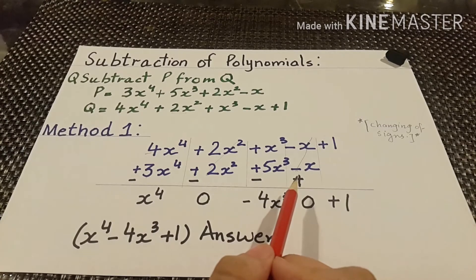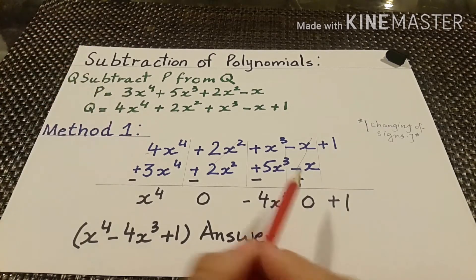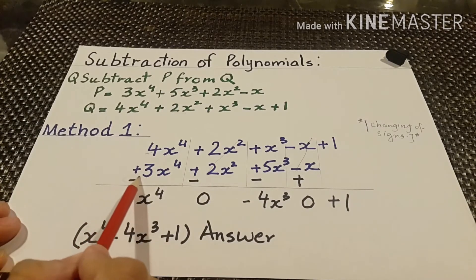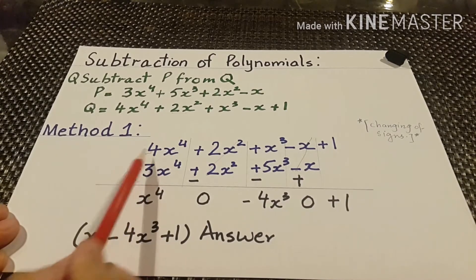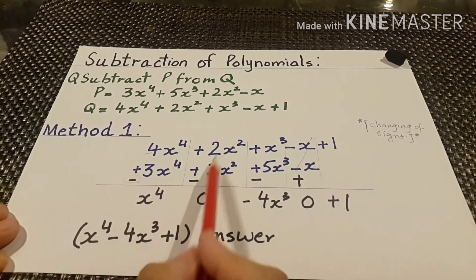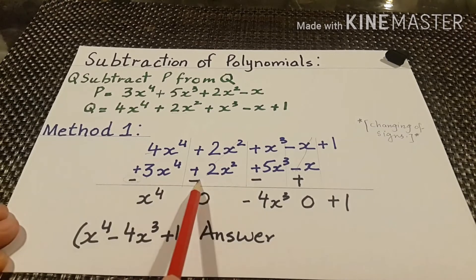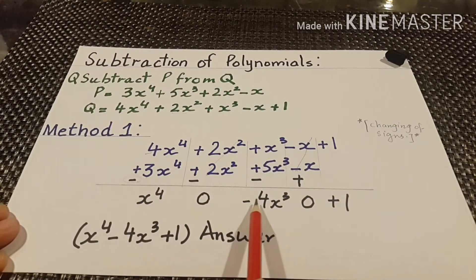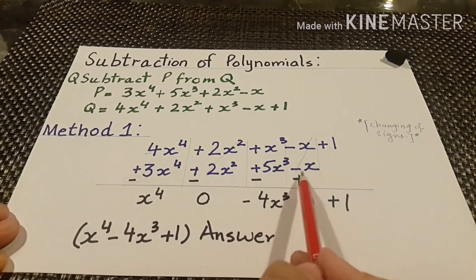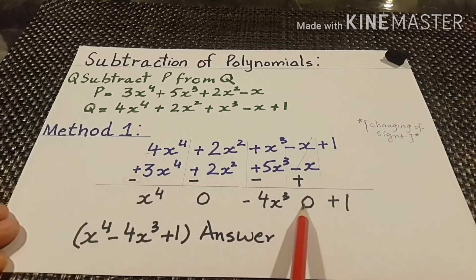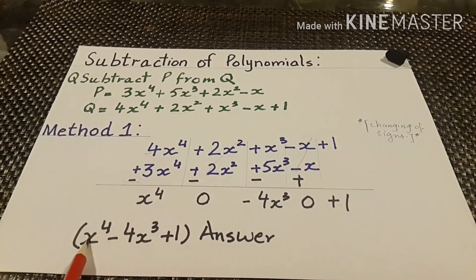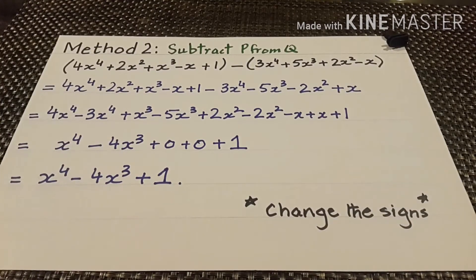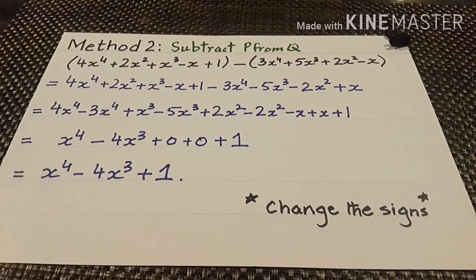When the signs are changed, we proceed to solve. The x to the power 4 terms — plus and minus cancel. Then minus 4x cubed. The minus x plus x also cancels giving 0. And plus 1 comes down. So by subtracting p from q we get x to the power 4 minus 4x cubed plus 1.